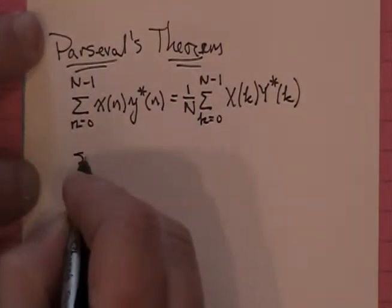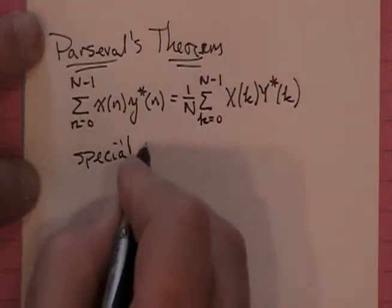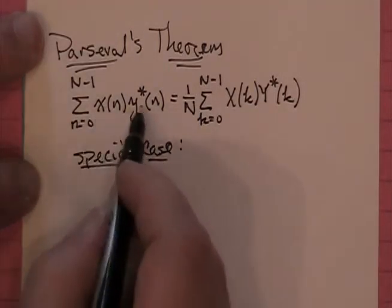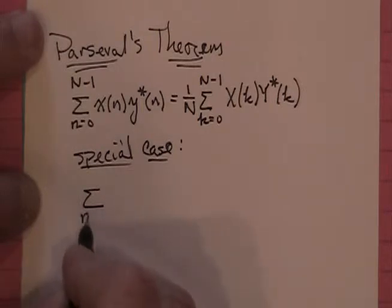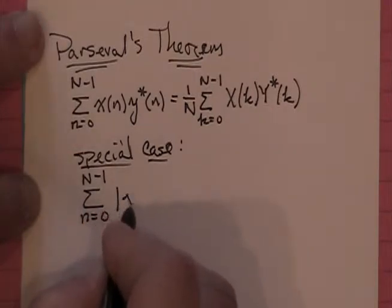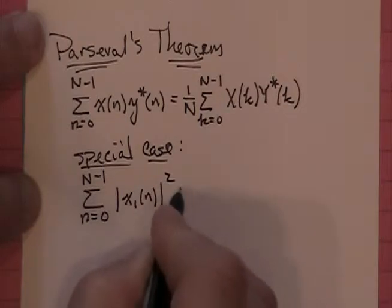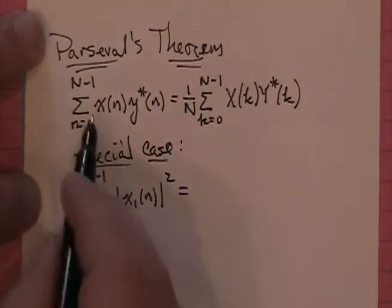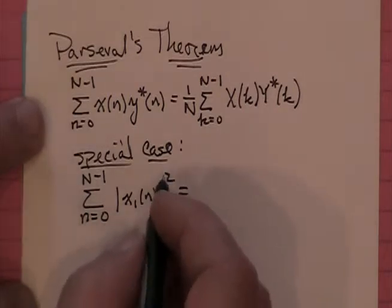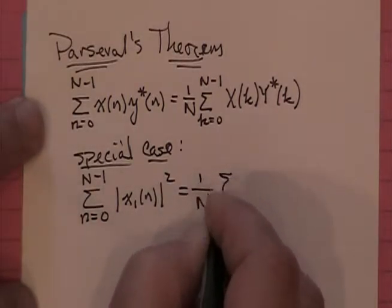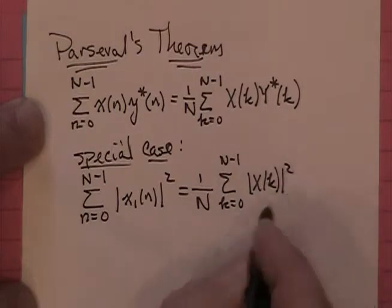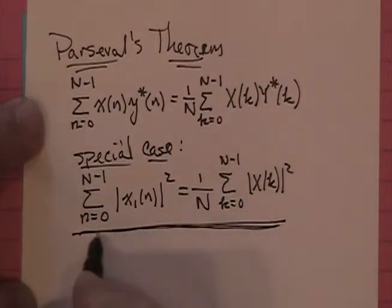By far the most common form of Parseval's Theorem you're going to see is where X and Y are both equal, so the summation ends up being a power calculation. Summing from 0 to N minus 1, if I find the average power in a waveform — magnitude of x of n squared — I get 1/N times the summation over values of k of the magnitude of X of k squared. So there's the form of Parseval's Theorem we see all the time.